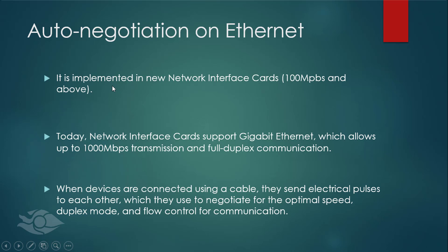Auto-negotiation is only implemented in the new network interface cards. Today, network interface cards support Gigabit Ethernet, which allows up to 1000 megabits per second transmission speed and full duplex communication. When devices are connected using a cable, they send electrical pulses to each other, which they use to negotiate for optimal speed, duplex mode, and flow control for communication.